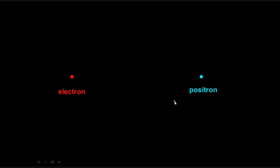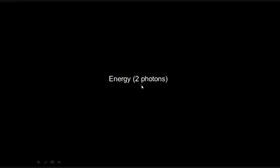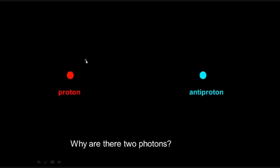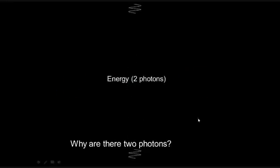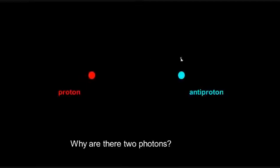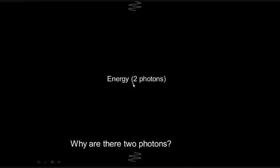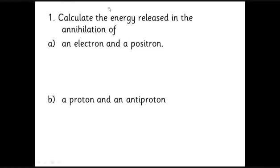In the animation: an electron and positron hit each other and two photons come whizzing out. With a proton and anti-proton colliding, much more energy is released. The reason we get two photons is momentum conservation: the electron and positron travel in opposite directions, so total momentum is zero before the collision. Since photons carry momentum, a single photon would give net momentum — so two photons must go in opposite directions to keep total momentum zero.